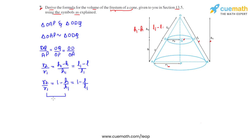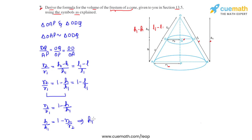Equating these, R2 by R1 equals 1 minus H by H1, so H by H1 equals 1 minus R2 by R1. Rearranging and simplifying, we get H1 equal to H times R1 divided by (R1 minus R2).